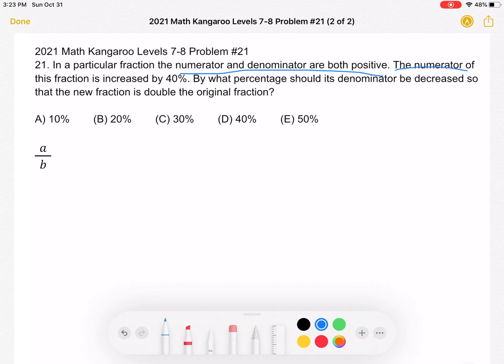Next, we increase the numerator by 40%. So that means that our new fraction is going to be 1.4A over B times some percentage. We're trying to figure out by what percentage should the denominator be decreased so the new fraction is double the original fraction.